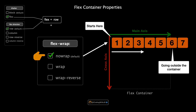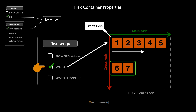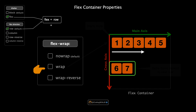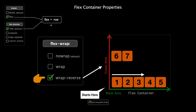Next, let's switch to wrap. When we set flex-wrap to wrap, flex items will line up on one line until there's no more room, then they start a new line from the left — similar to how words wrap to a new line in a paragraph. This is incredibly useful for responsive designs because it allows items to adapt to different screen sizes without overflowing. Lastly, with wrap-reverse the behavior is similar to wrap, but instead of starting a new line from the top, items start from the bottom and wrap upwards.